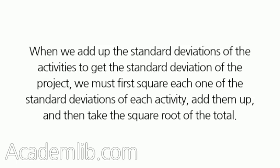When we add up the standard deviations of the activities to get the standard deviation of the project, we must first square each one of the standard deviations of each activity, add them up, and then take the square root of the total.